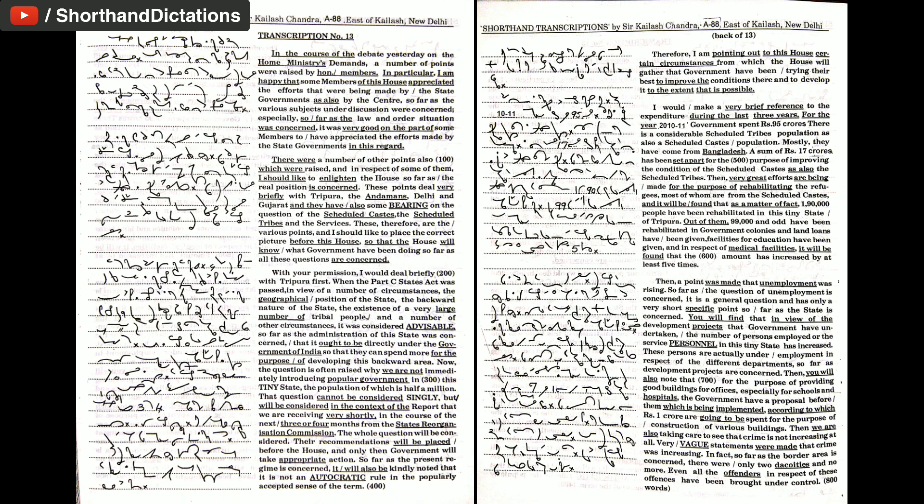Then, very great efforts are being made for the purpose of rehabilitating the refugees, most of whom are from the scheduled castes. And it will be found that, as a matter of fact, 1,90,000 people have been rehabilitated in this tiny state of Tripura. Out of them, 99,000 and odd have been rehabilitated in government colonies and land loans have been given, facilities for education have been given.